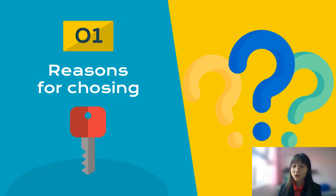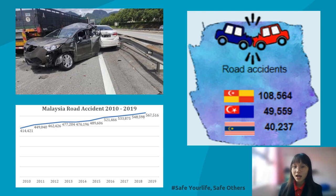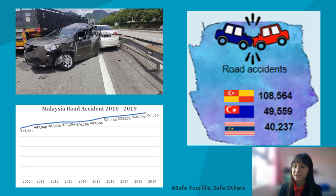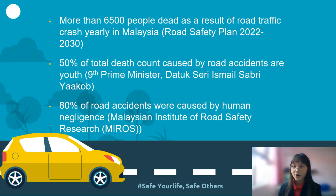There are a few reasons why we chose this title. The number of road accidents in Malaysia is increasing every year and causing many deaths. Selangor State hits the highest number of road accidents in Malaysia, followed by Johor State and Wilayah Persekutuan Kuala Lumpur. According to studies and reports, more than 6,500 people die as a result of road traffic crashes yearly in Malaysia. Besides that, 50% of total death counts caused by road accidents are youth.